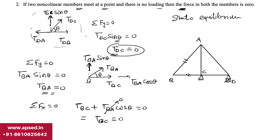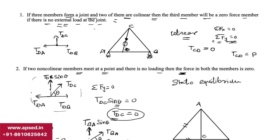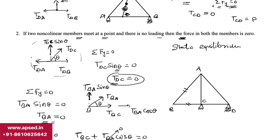You don't always need to sum forces — you can simply remember these two statements for quick answers. Rule 1: three members at a joint, two collinear, no external force at the joint → third member is a zero force member. Rule 2: two non-collinear members at a joint, no load at the joint → force in both members is zero. In both rules, if any load acts at the joint, the zero force conclusion does not apply.